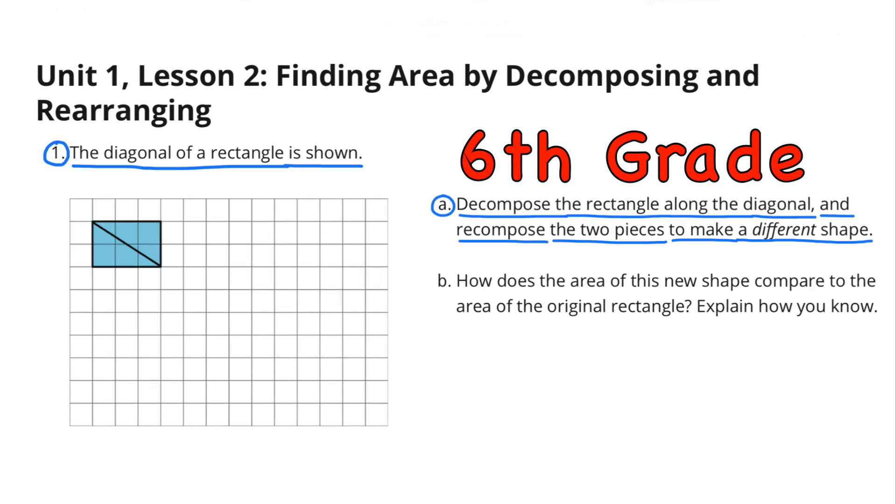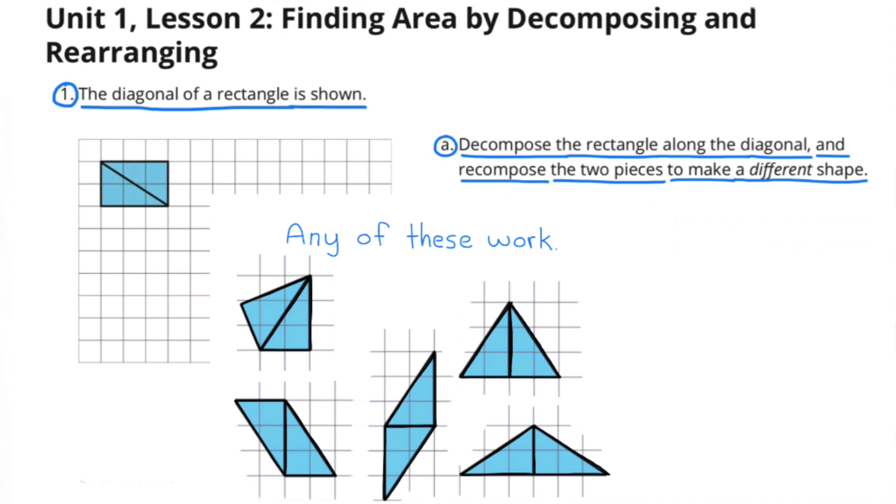Number 1. The diagonal of a rectangle is shown. Part A: Decompose the rectangle along the diagonal and recompose the two pieces to make a different shape. Any of these shapes would work.